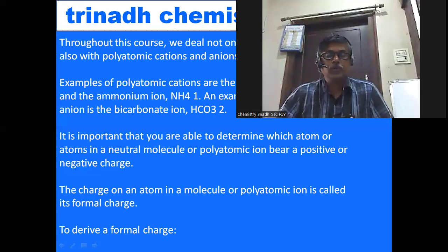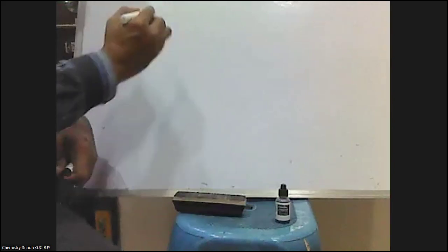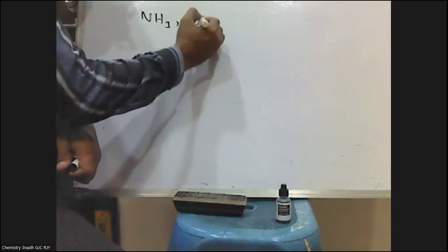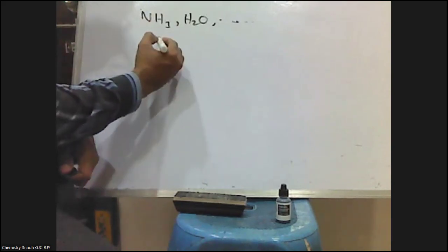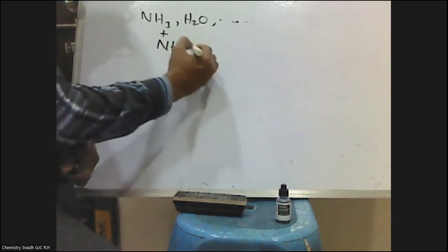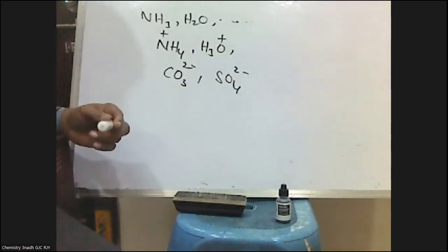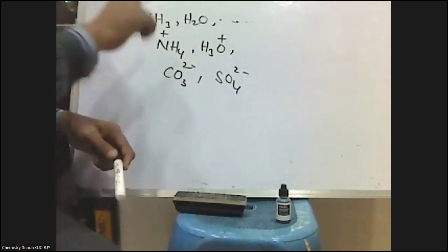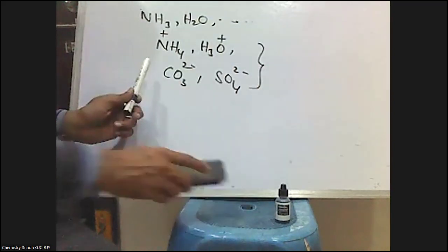In the intermediate course, we deal not only with molecules, but also with polyatomic cations and anions. Polyatomic molecules means such as ammonia, H₂O — all these are polyatomic neutral molecules. Along with polyatomic molecules, we also deal with some polyatomic ions, such as NH₄⁺, H₃O⁺, CO₃²⁻, SO₄²⁻, and so on. So throughout this course, we deal not only with polyatomic molecules but also with polyatomic anions and cations — that is, polyatomic ions as well.